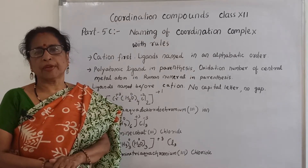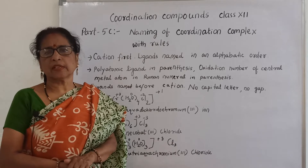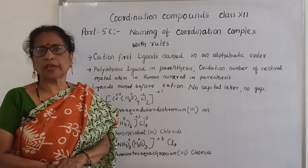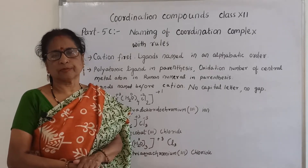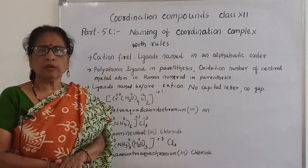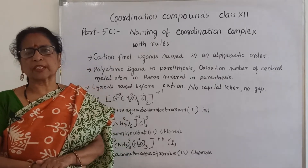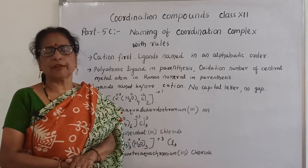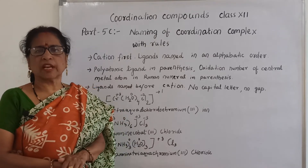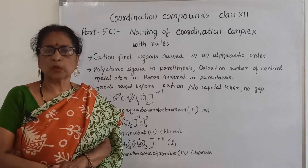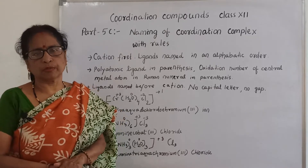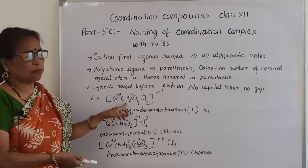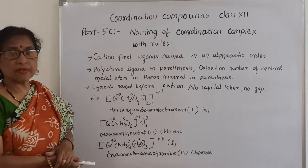In parts 5A and 5B, I have already explained how to write the cation, how to write the oxidation number, how to calculate the values of a complex ion, and how to write the complex formula. Now we will see what coordination compound naming is and what the main rules are. Before starting, I want to revise the rules again.